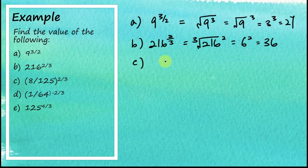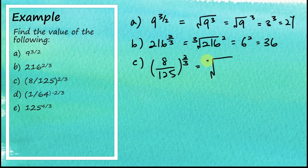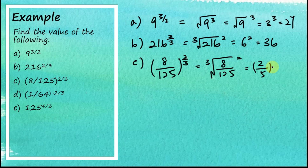C: we have a fraction, 8 over 125, to the power of 2 over 3. This is equal to the cube root of 8 over 125, squared. The cube root of 8 is 2 and the cube root of 125 is 5. Squaring the fraction gives 2 squared over 5 squared, which is 4 over 25.